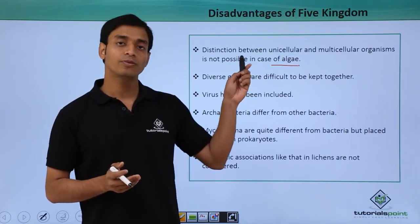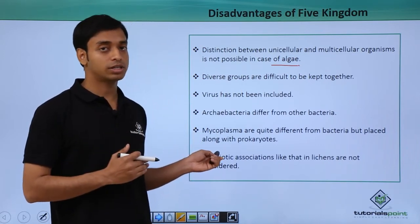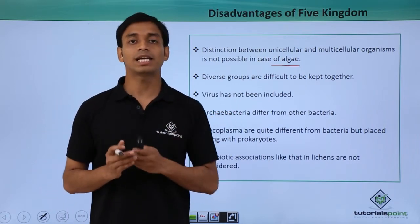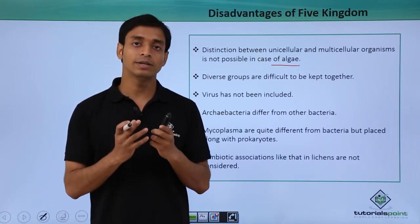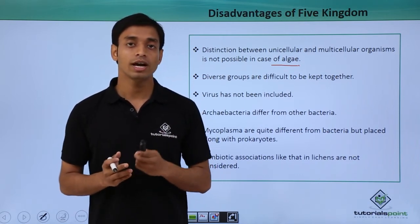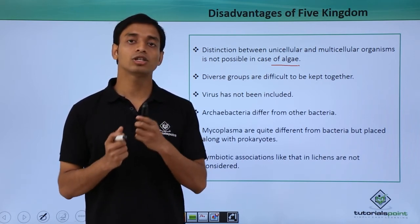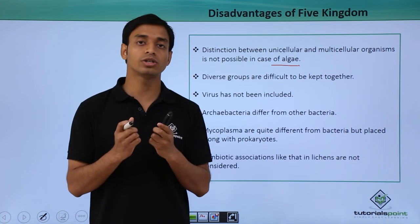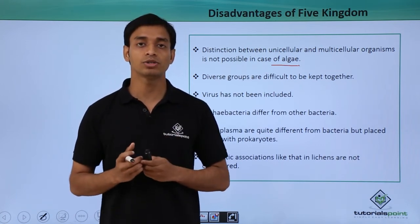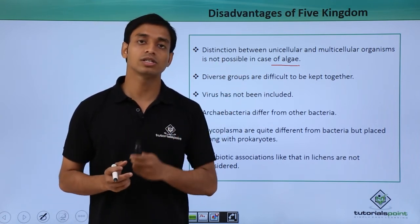This is a limitation of the Five Kingdom System of Classification. Another important disadvantage is that the Five Kingdom Classification did not consider symbiotic relationships or organisms which live in symbiotic association. A very important example is lichens — the mutual association between fungi and algae — which was not considered in the Five Kingdom Classification System.